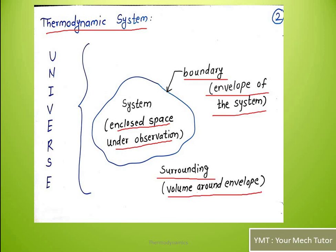Together, system plus boundary plus surrounding is called the universe. So there are three terminologies we will come across: a system, a boundary, and a surrounding — which is the environment around the system.